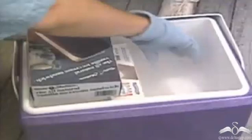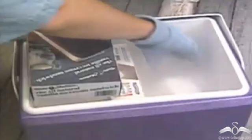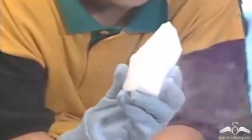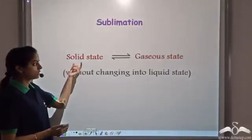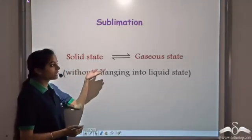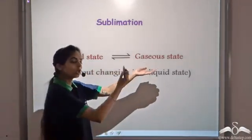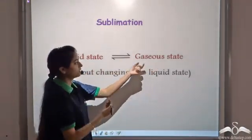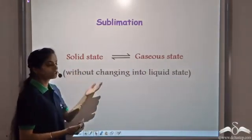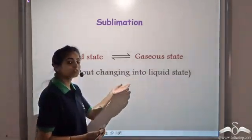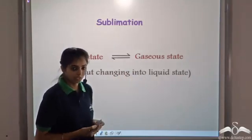Observe the video. Here a solid is taken which is called dry ice. See that the solid is directly changing into the gaseous state without changing into the liquid state. This phenomena where the solid state directly changes into the gaseous state, or the gaseous state directly changes to the solid state without changing into the liquid state, is known as sublimation.